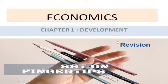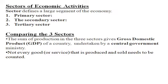This is a lecture of Chapter 1 - Development. We have seen the sectors of economic activities. There are three sectors: primary, secondary, and tertiary. Comparing the three sectors, we find out the Gross Domestic Product, which is the total sum of production of the three sectors.